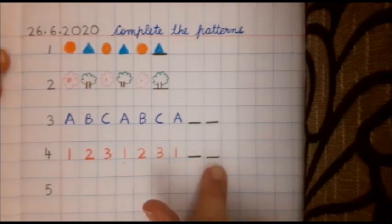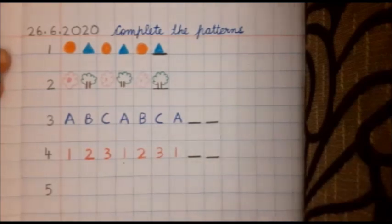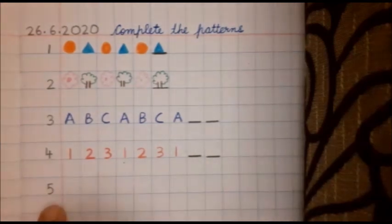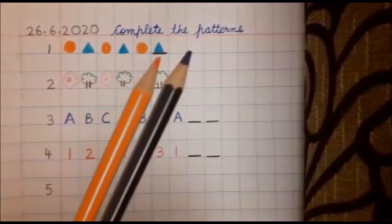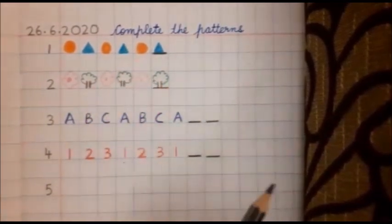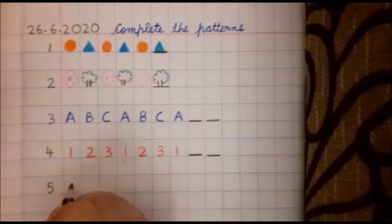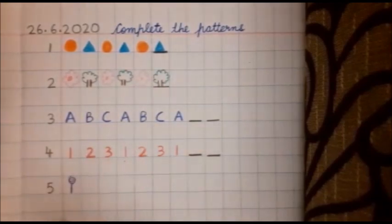Okay, good children. Now for the last pattern, pattern number five, I have taken two colors, purple and orange. Now see what Anubha ma'am is going to draw. What is this? It is a lollipop. Anubha ma'am has made a lollipop.